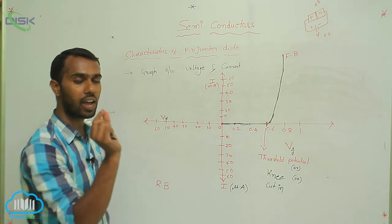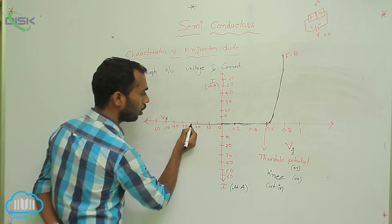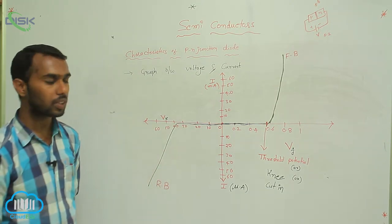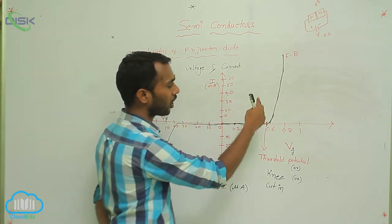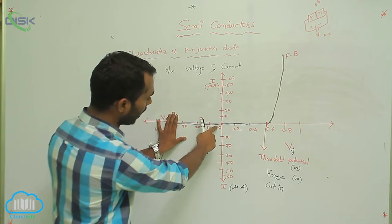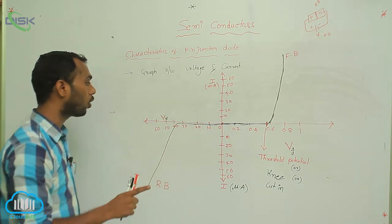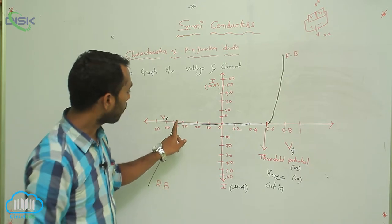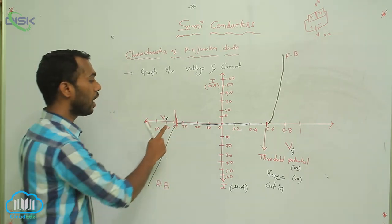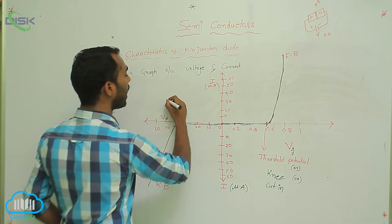Now, come to reverse bias. In reverse bias, current is very, very less — in microamps, current is very, very less. After a particular potential, current increases rapidly. In forward bias current is more; in reverse bias current is less. But after a particular potential in reverse bias, we also get more current. That particular potential at which we get more current is called the breakdown potential.